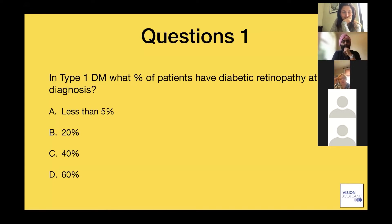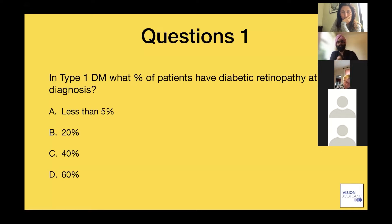In type 1 diabetes, what percentage of patients have diabetic retinopathy at diagnosis? If patients have been diagnosed with type 1 diabetes and you look in the back of their eye, what percentage do you expect to have diabetic retinopathy changes?